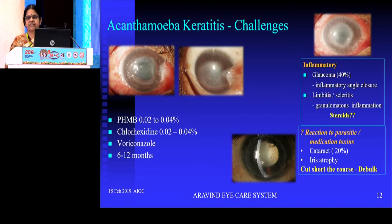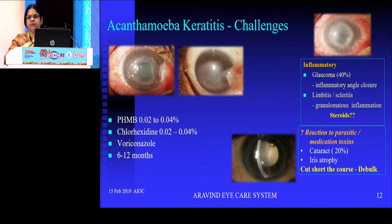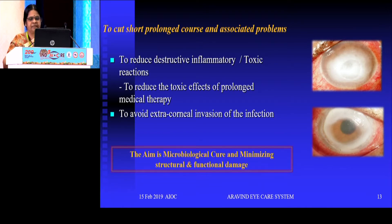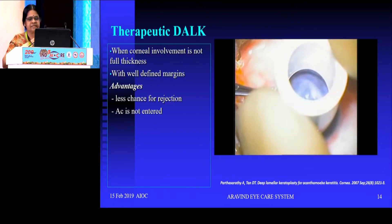With Acanthamoeba, two main problems arise. First, because of the prolonged course, toxicity — either from toxins produced by the organism or from medications — can affect the eye very badly. Second, if the infection spreads to the sclera, we may lose the globe itself. As previously mentioned, Acanthamoeba treatment may continue even up to a year. If the infection is progressing peripherally or prolonging, we must plan for a therapeutic intervention without hesitation.